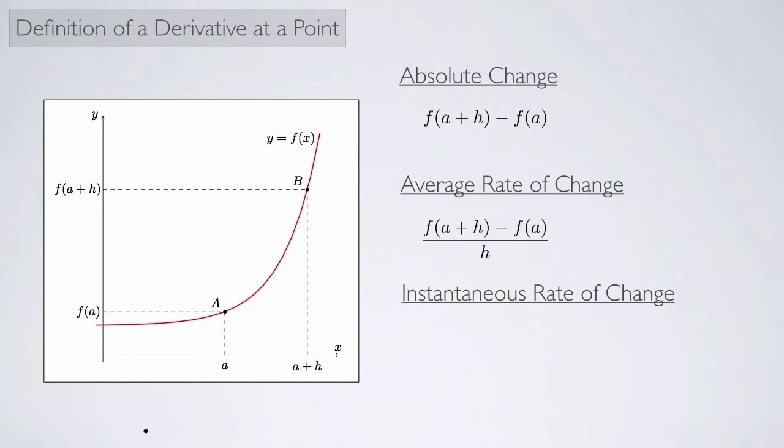We can also look at the instantaneous rate of change, and we take the limit as h goes to zero of the average rate of change. So what we're doing is we're shrinking the interval between a and b, and allowing b to get closer and closer to a. And we saw that this was equivalent to the slope of the tangent line. So this green line right here would represent a tangent line.